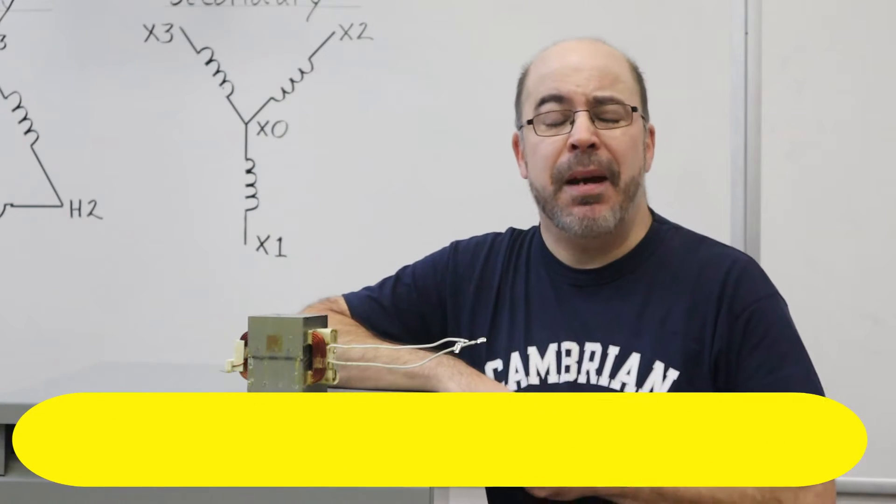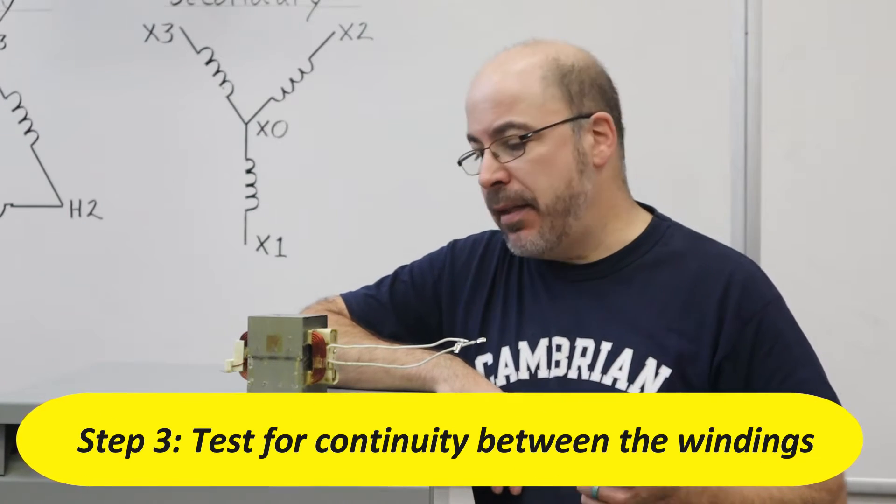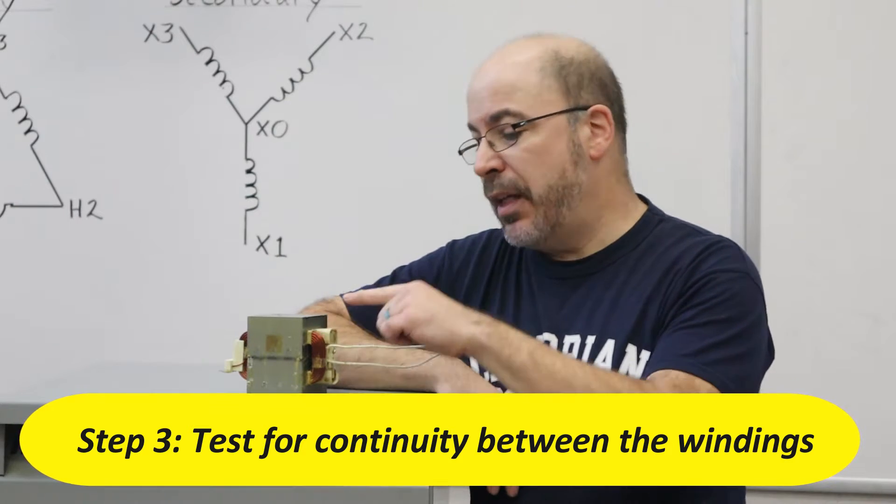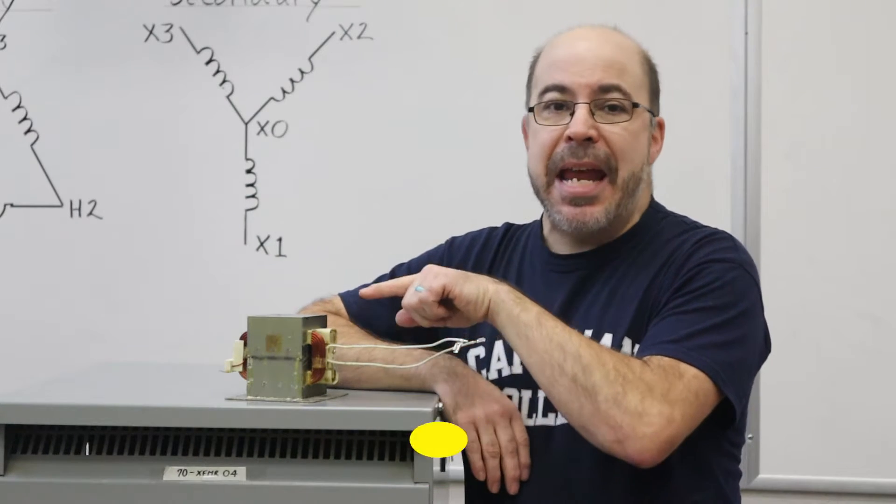And finally that brings me to my last test. The last test is I want to make sure that there is no electrical connection between the primary and the secondary windings. Now it's a simple enough test, but what's going to be the best tool for this?